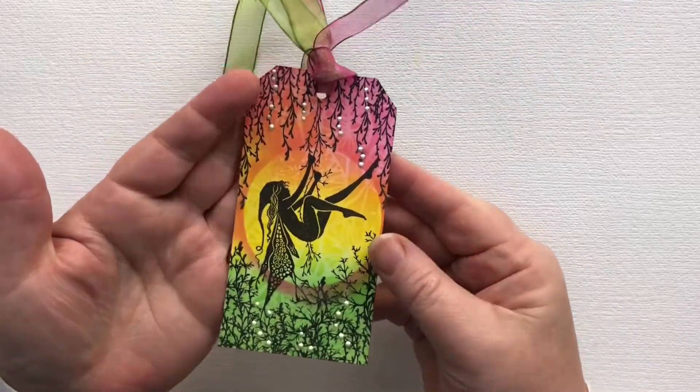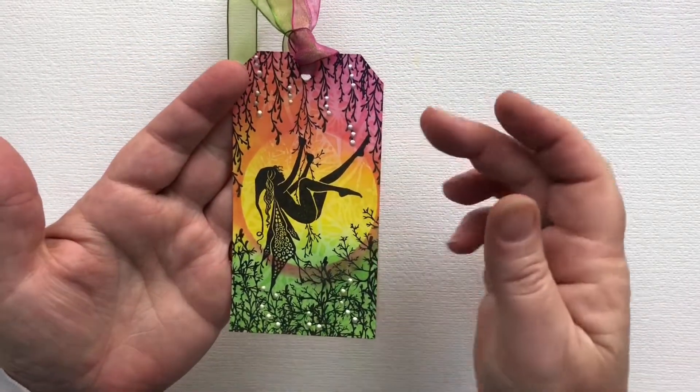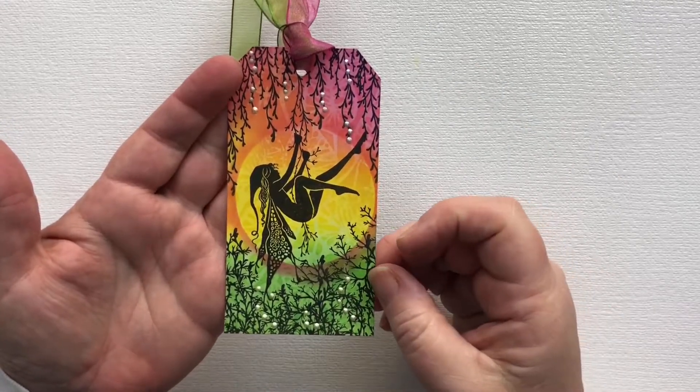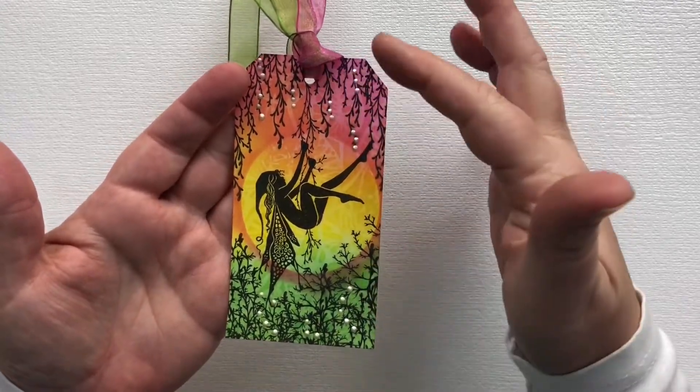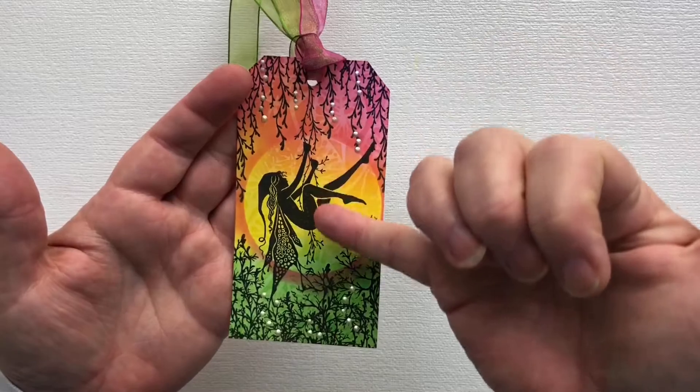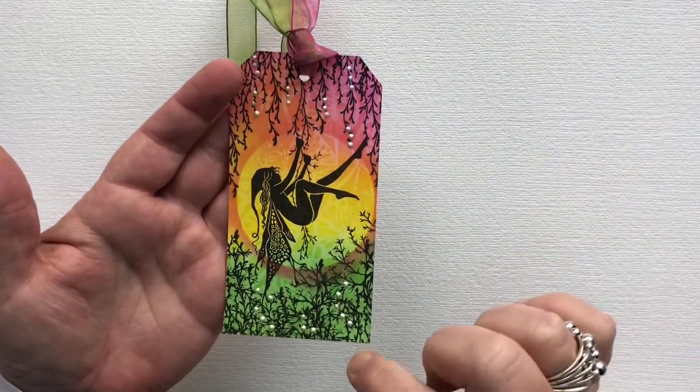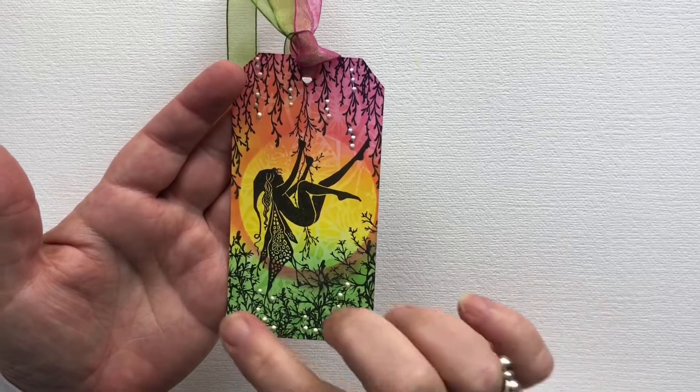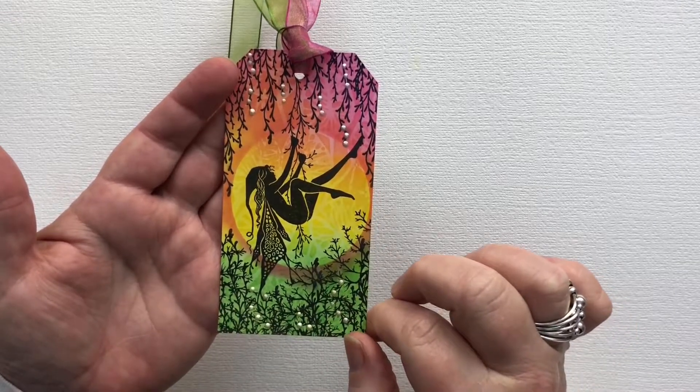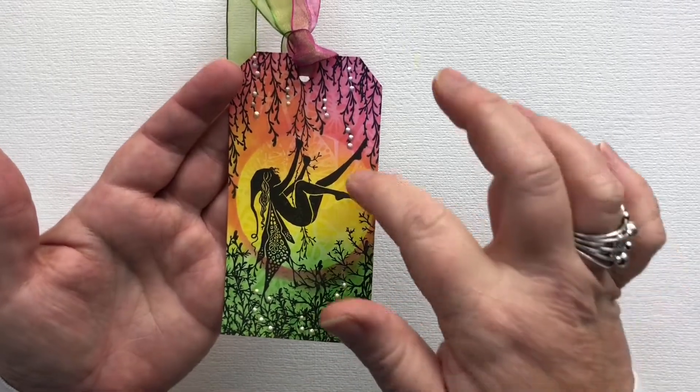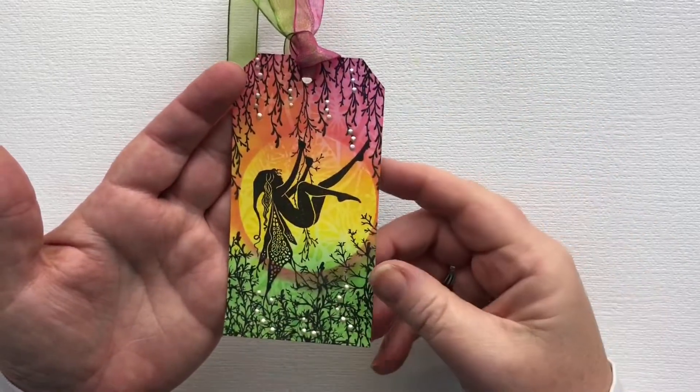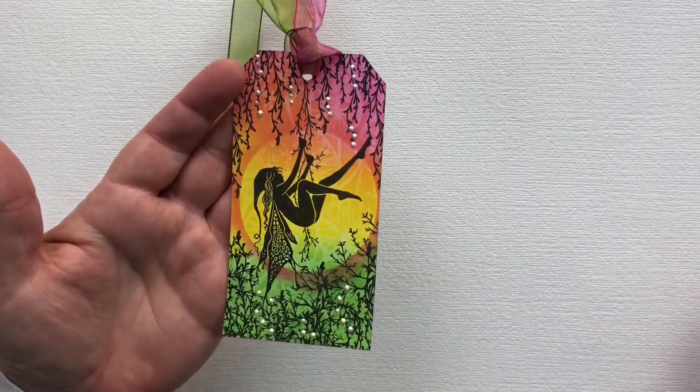I've created something really bright and cheerful for us. We're going to use three colors of Distress Oxides. We're using the lovely Lavinia stamps with the fairy called Rue. We've got Spanish moss hanging down and coming up, as well as fern leaf at the bottom, creating this lovely moon glow around her. Let's get started.